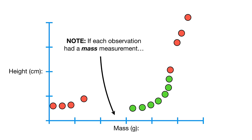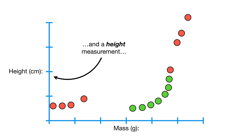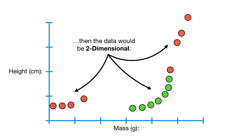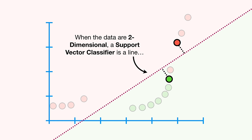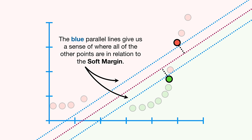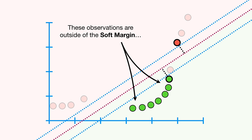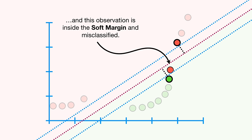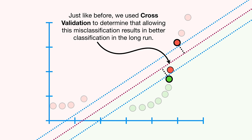If each observation had a mass measurement and a height measurement, then the data would be two-dimensional. When the data are two-dimensional, a support vector classifier is a line, and the soft margin is measured from two points. The blue parallel lines give us a sense of where all of the other points are in relation to the soft margin. Some observations are outside of the soft margin, while others are inside the soft margin and misclassified. We used cross-validation to determine that allowing this misclassification results in better classification in the long run.